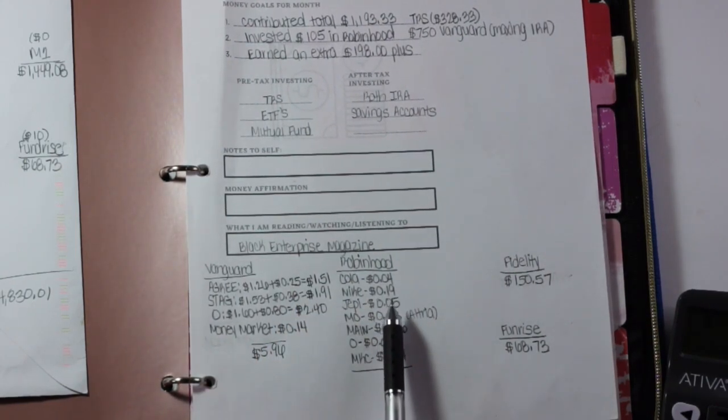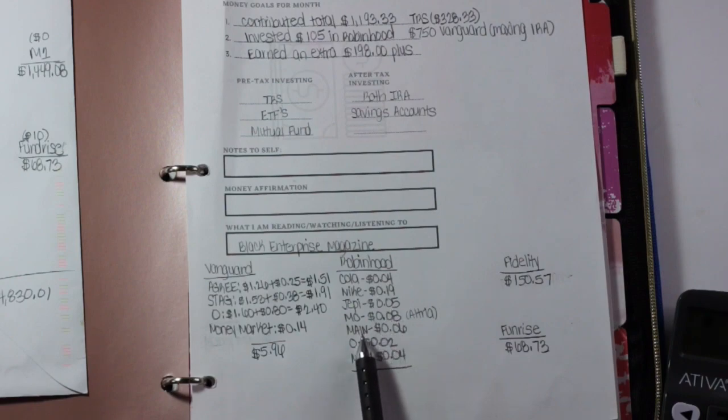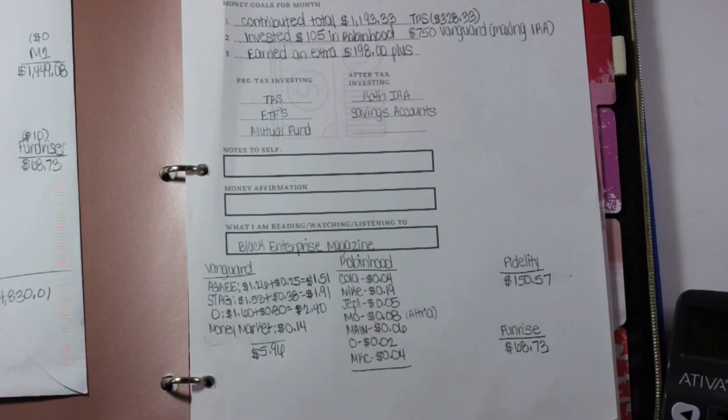Now for Robinhood, I earned $0.04 for Coca-Cola, Nike $0.19, Jeffy $0.05, Altria $0.08, Main Street $0.06, O Realty $0.02, McCormick $0.04. So total, let's just add all of this up. That was $0.48.